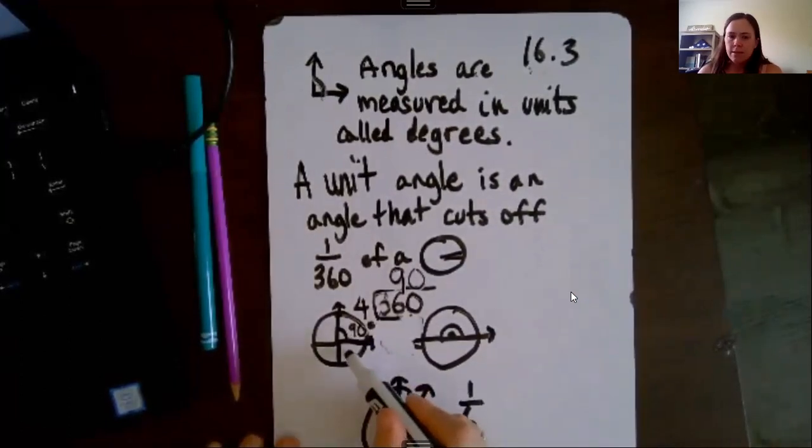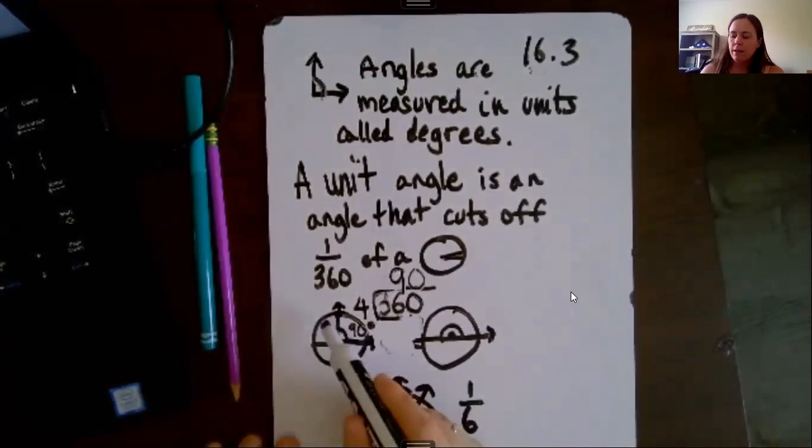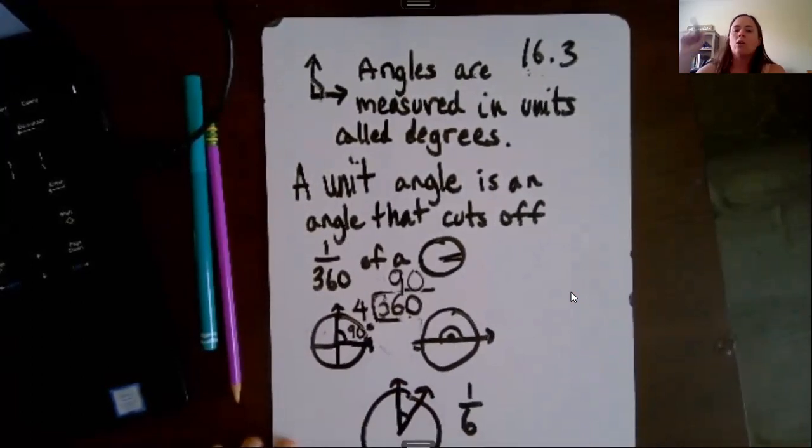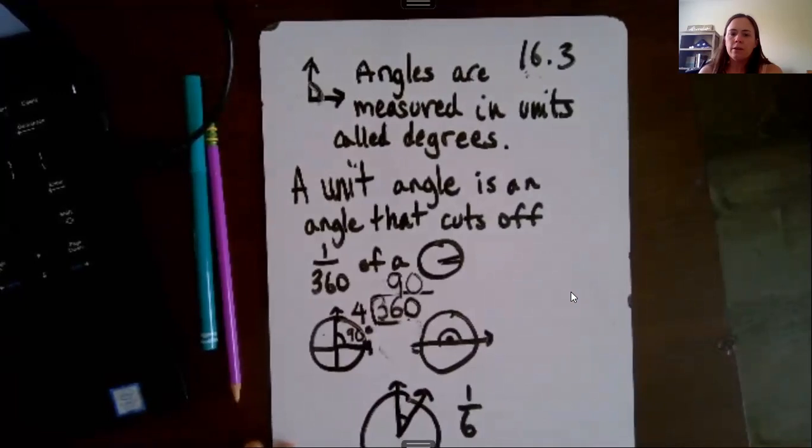So that's 90 degrees, this is 90 degrees, this is 90 degrees, and this is 90 degrees. So all together they should always equal 360 degrees. If they wanted to know what two pieces of this circle were, you could just do 90 plus 90, and that would tell you two pieces of a circle.